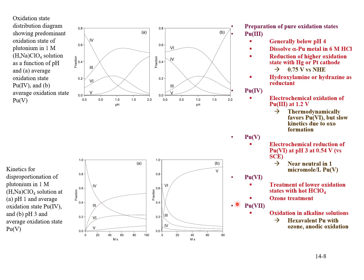Here are routes for producing different oxidation states of plutonium. The general route for making a given oxidation state stock solution: if you want a plutonium-3 or -4, you take your solution and reduce it to the 3 — for instance using hydroxylamine — then if you want the 4, oxidize that up. Conversely, if you want the 6, oxidize everything to the 6; ozone is a very good route for doing this. If you want the 5, reduce the 6 to the 5.